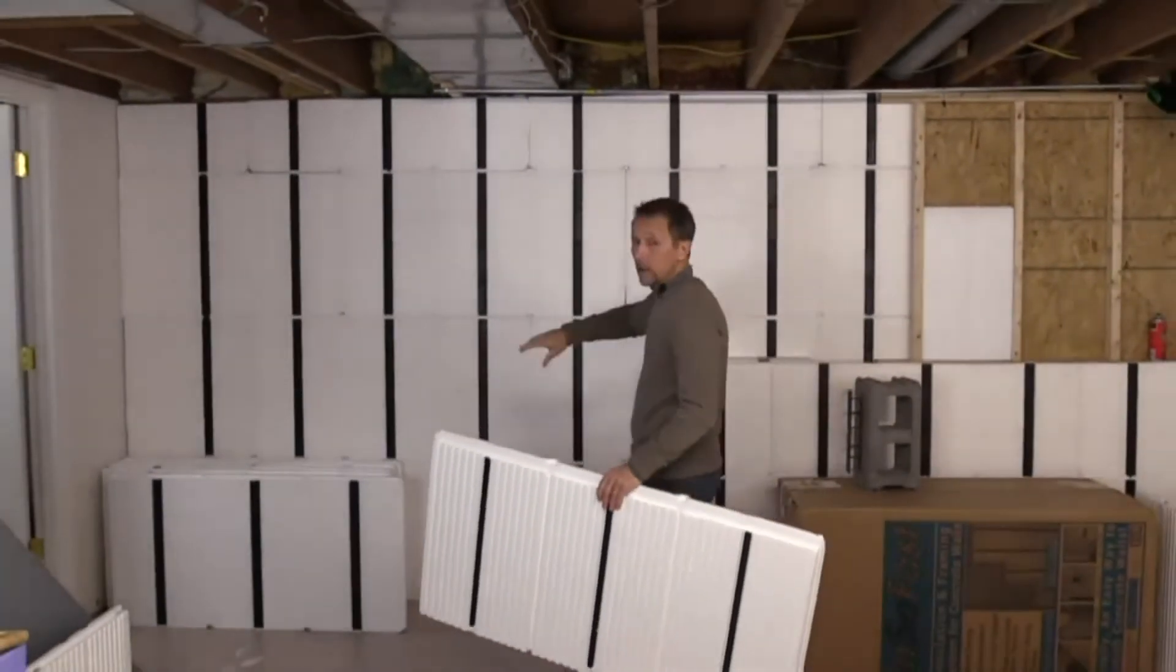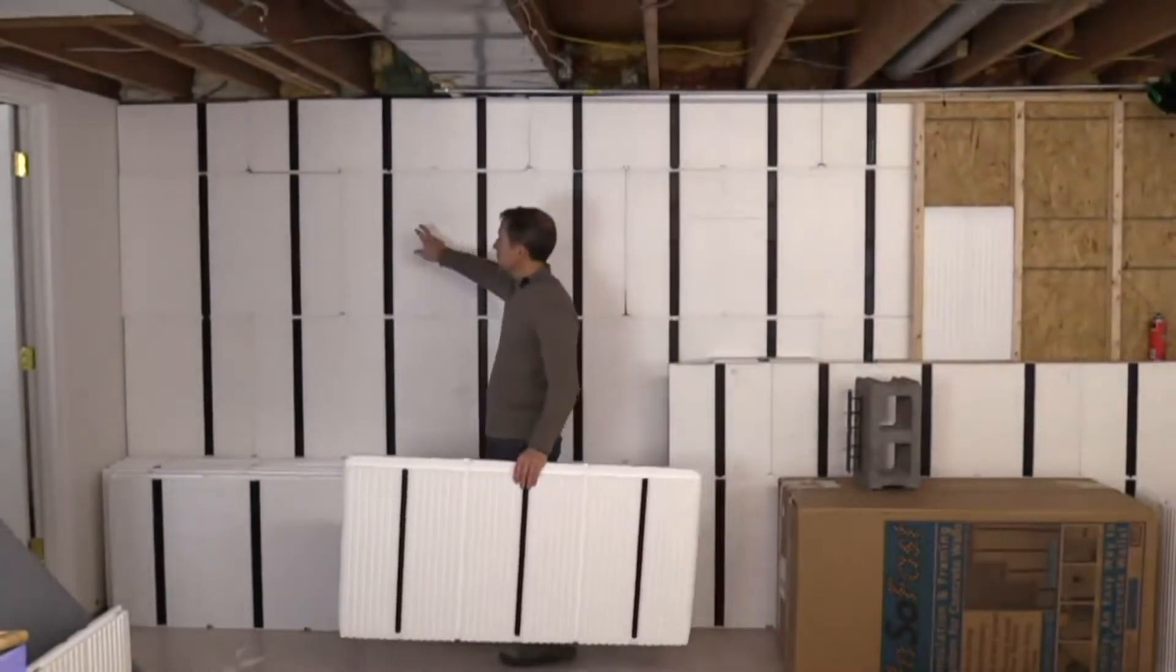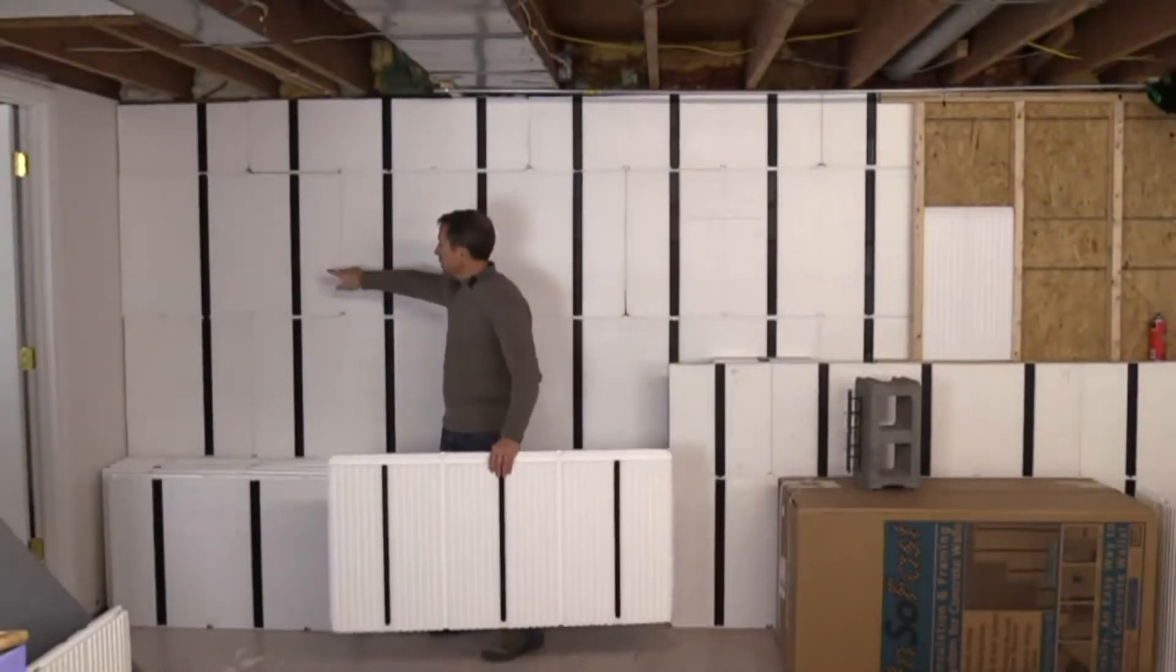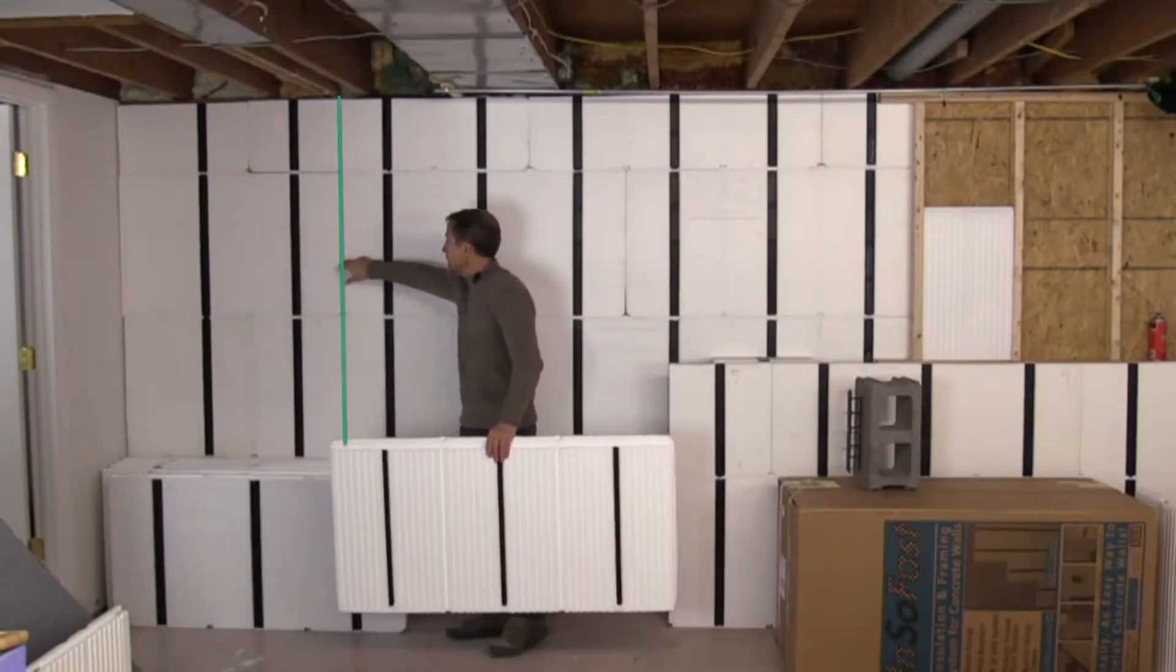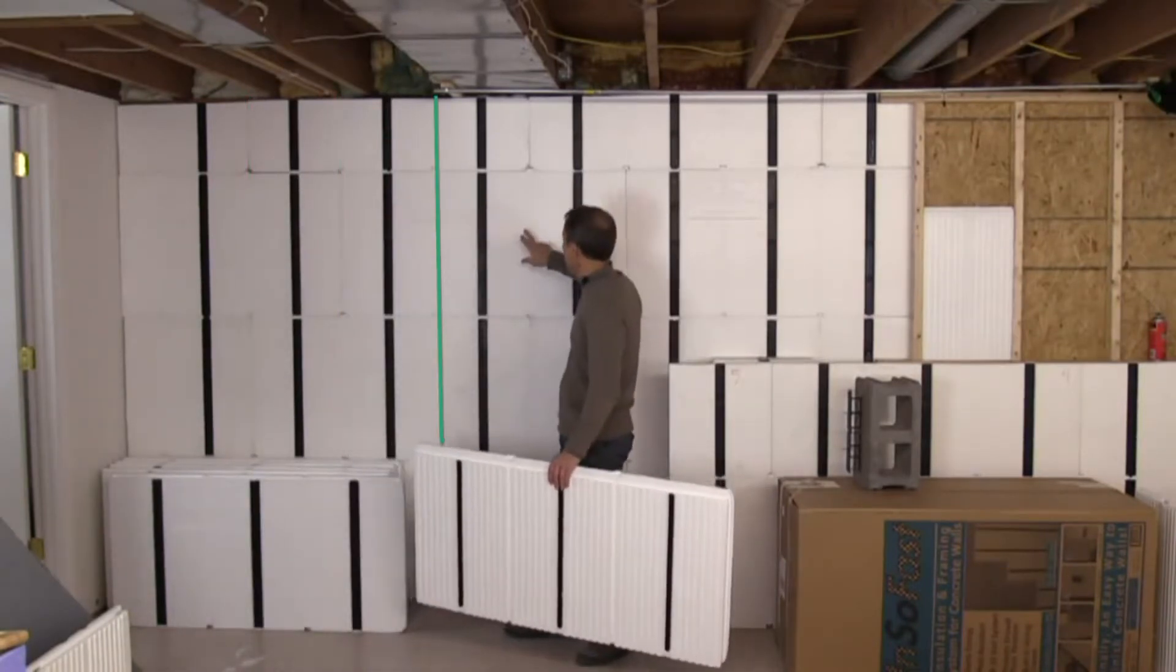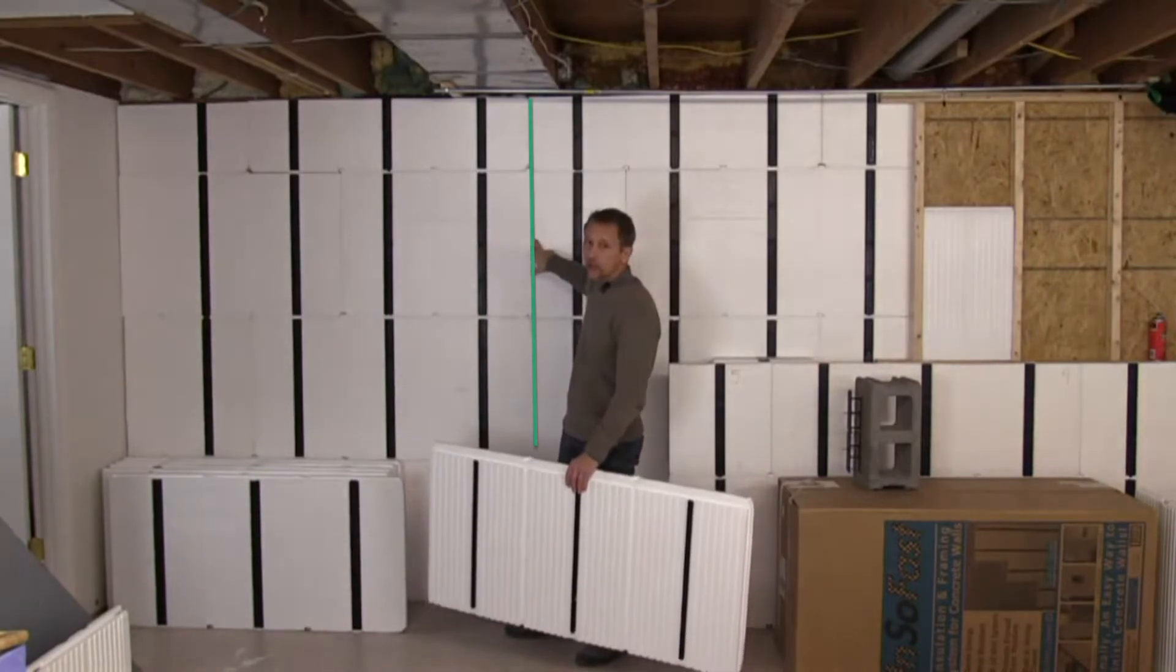Like the studs every 16 inches on center, you can see these lines right here are every 16 inches on center, and that shows you where the electrical raceways are.